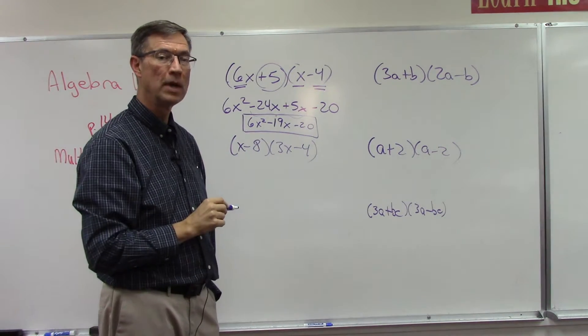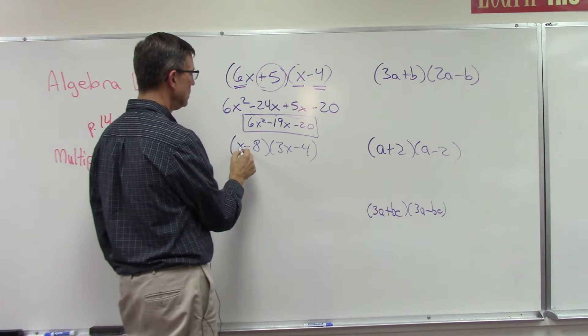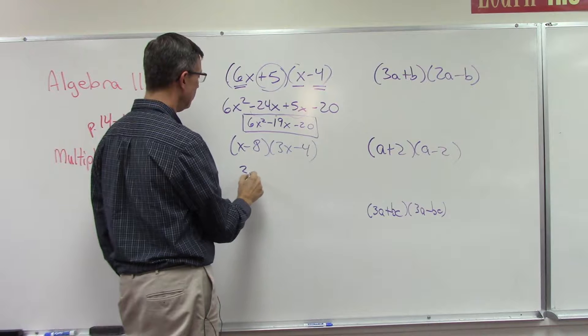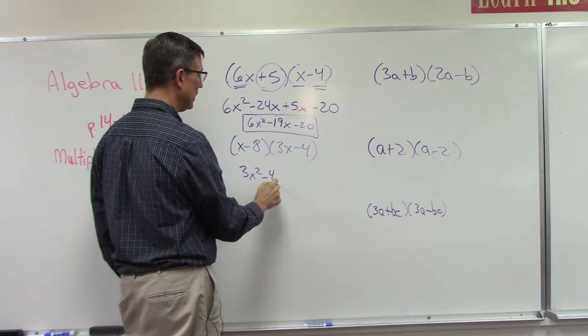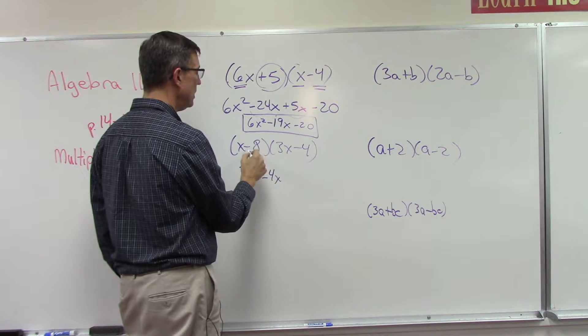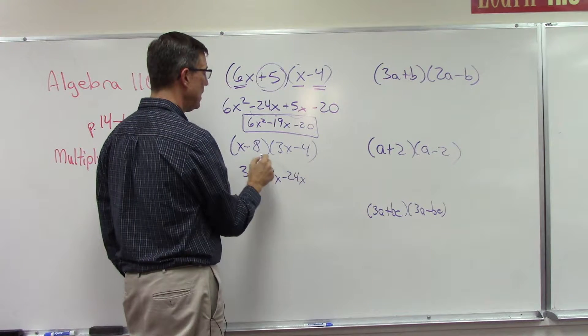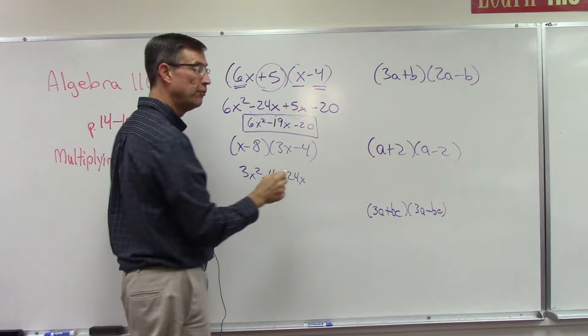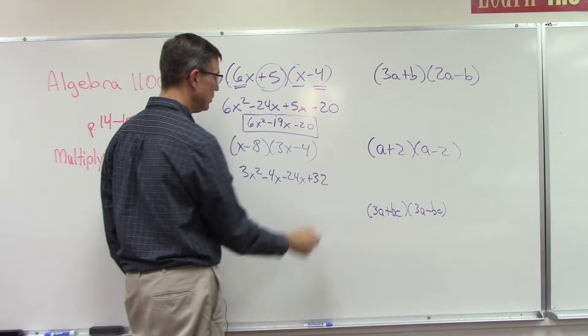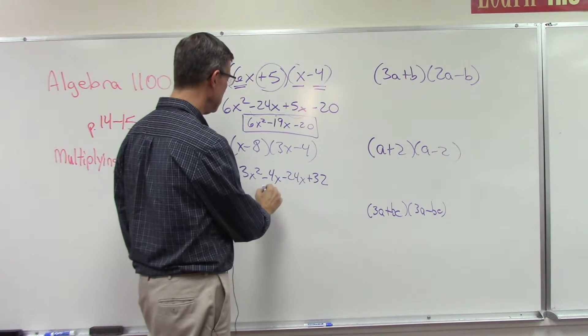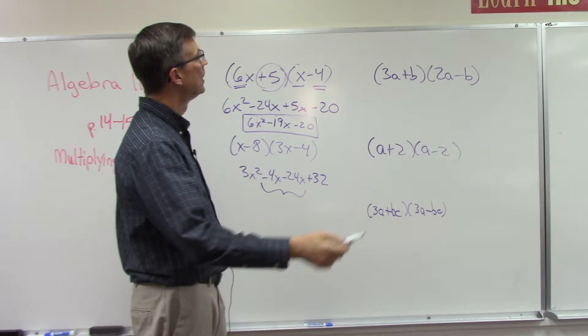Let's try another one. This one, let's do the FOIL method again: first, outer, inner, last. So x times 3x is 3x squared. Let's do the outer: x times negative 4 is negative 4x. Then the inner: negative 8 times 3x is negative 24x. And now negative 8 times negative 4, remember a negative times a negative since you're both negative will make it positive 32. I'm not going to finish that one for you. It's easy to see that you're going to combine these, they have like terms. Add and keep the common sign.